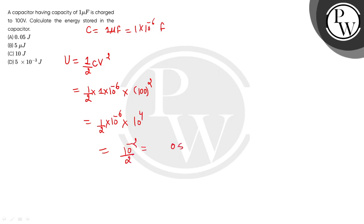That means, 0.5 into 10 power minus 2, which equals 5 into 10 power minus 3 joules.